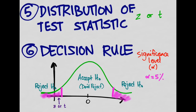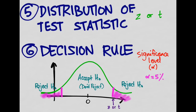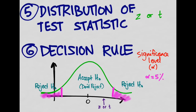Type 1 error is when we reject the null hypothesis even though it is actually true — so the null was true but our test statistic showed up in one of the rejection areas. The opposite is type 2 error, or beta error: when the test statistic falls in the area of non-rejection and yet the null hypothesis was actually false.